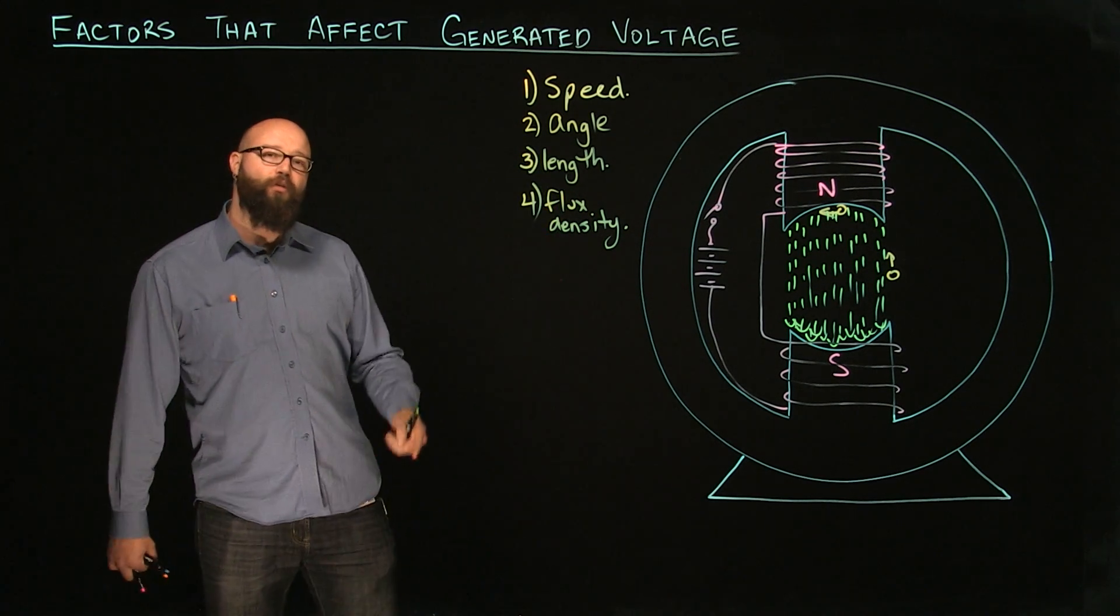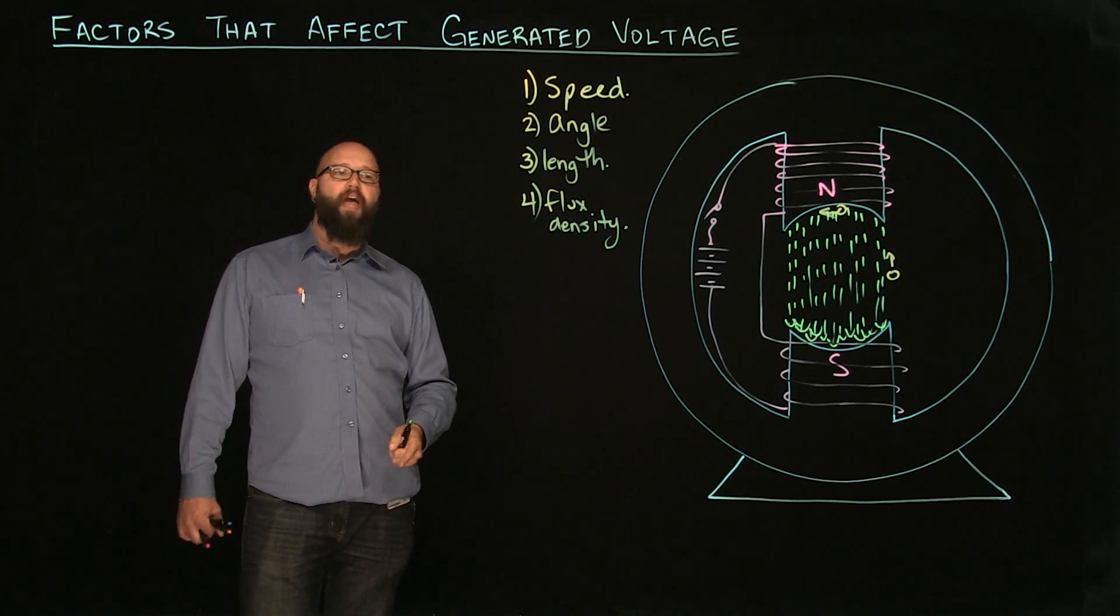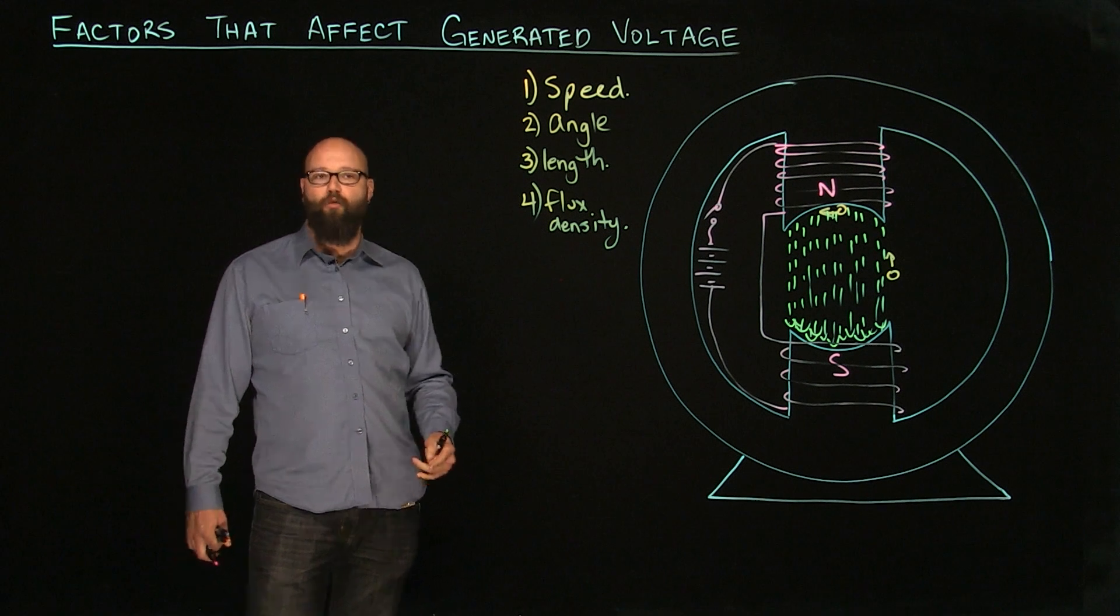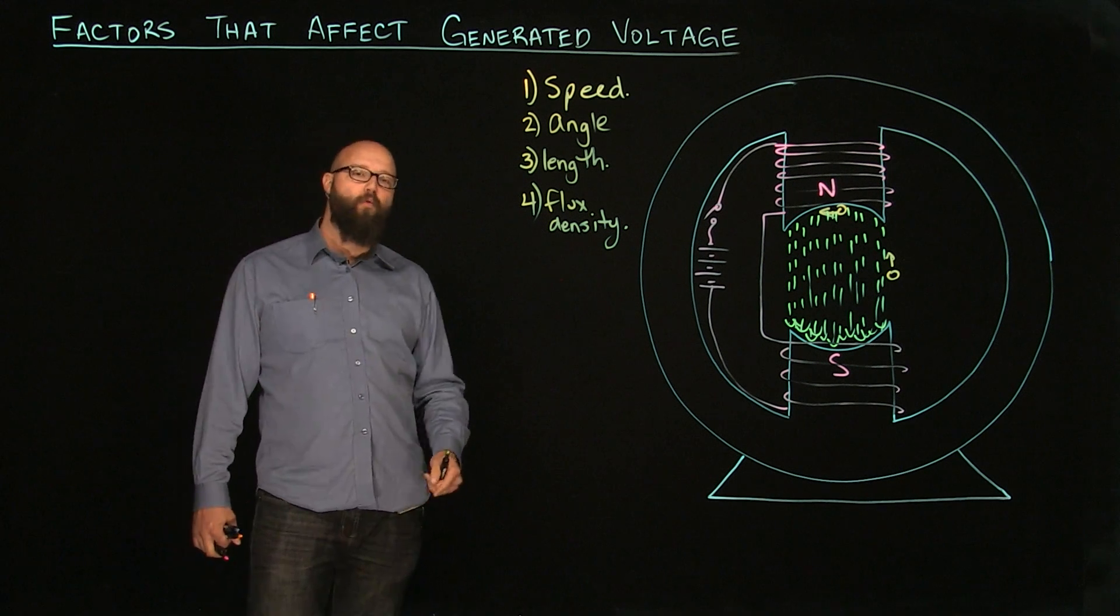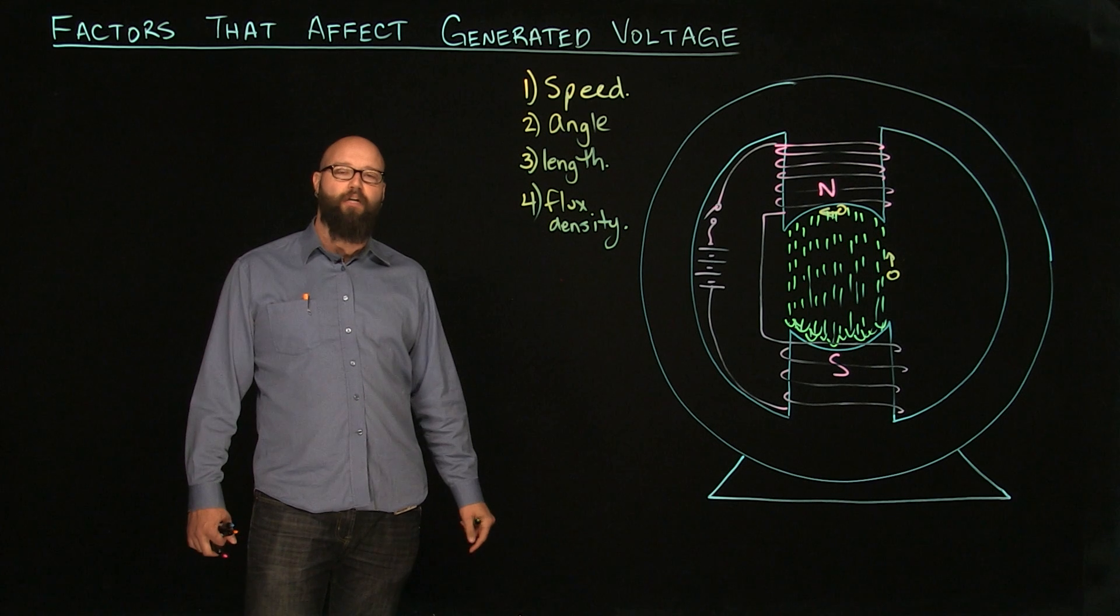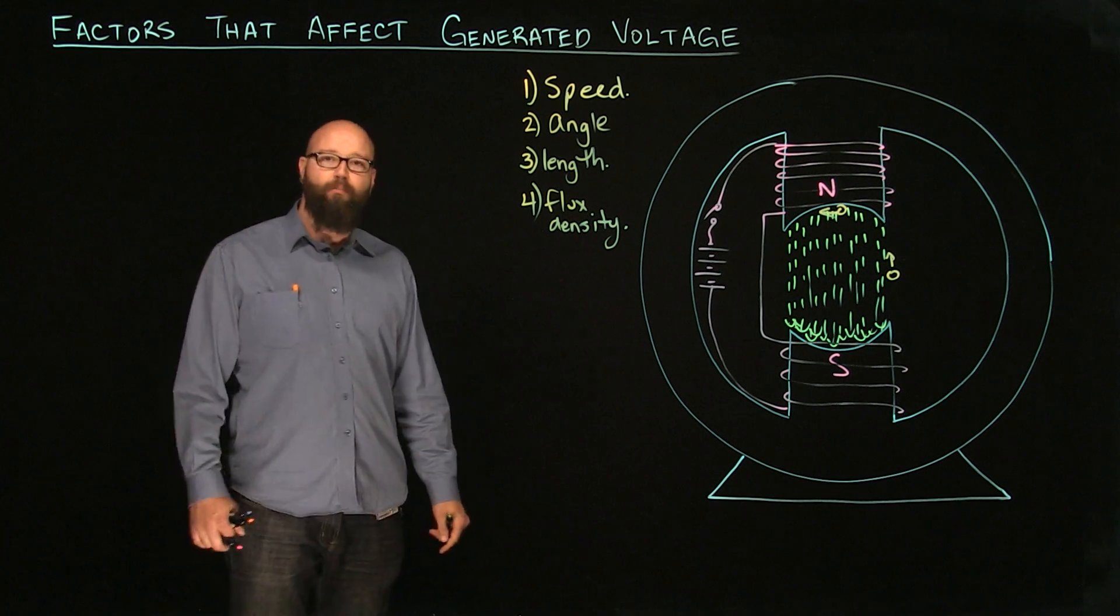So, factors that affect generated voltage. Number one, the speed. Number two, the angle. Number three, the length of the conductor rotating through the magnetic field. And number four, the flux density of the field itself. Thank you for watching. Hopefully this helps and we'll see you next time.